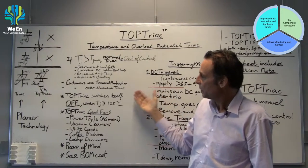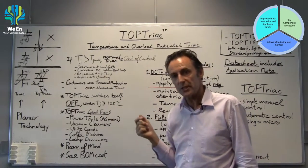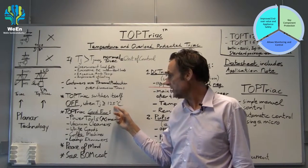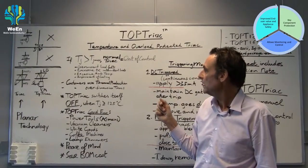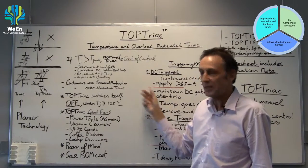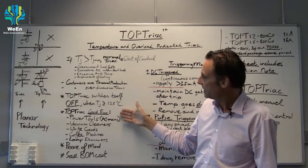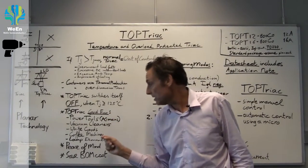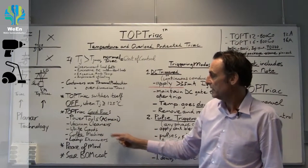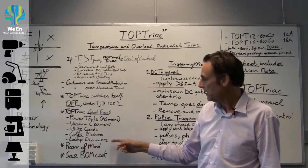The nice thing is with TOP TRIAC it will switch itself off when the junction temperature has reached 125 degrees Celsius. So external thermal protection components or over dimensioning of TRIACs is no longer necessary. We think the TOP TRIAC is very good for AC mains operated power tools, vacuum cleaners, white goods appliances, coffee machines, and lamp dimmers.